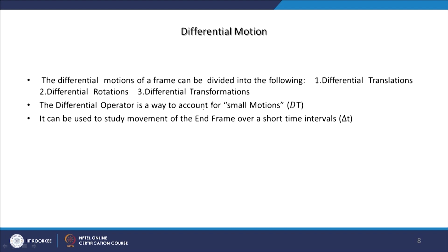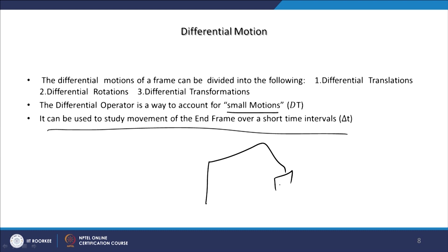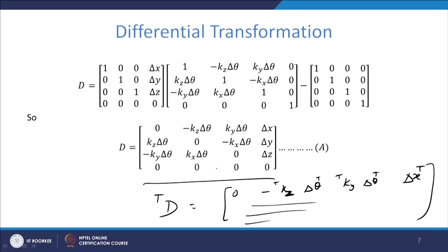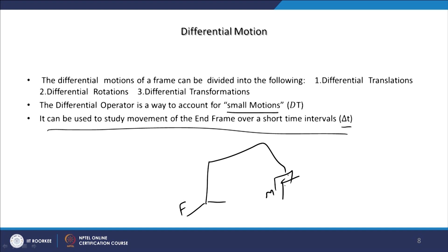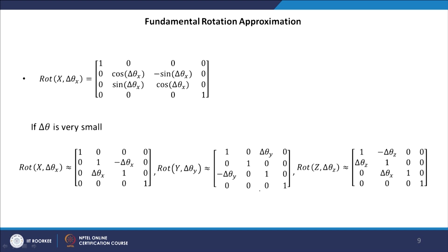The differential transformation represents a small motion. In robotics, this is useful because a robot manipulator has an end-effector coordinate frame and a base coordinate frame — one fixed and one moving. For a small time interval when the end effector makes a small rotation and translation, we can use this relation for the small translation-rotation matrix with respect to the end effector itself or with respect to the base frame.